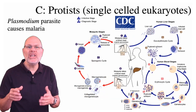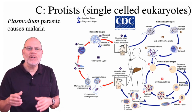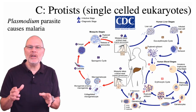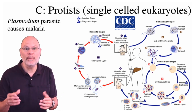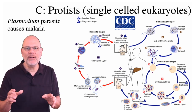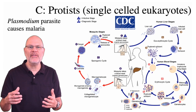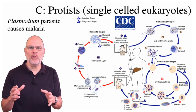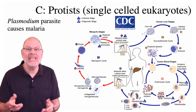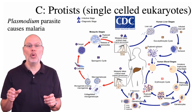Protists — single-celled eukaryotes — can also be pathogens. An example is Plasmodium, which causes malaria. Plasmodium is carried by mosquitoes and it infects red blood cells. Imagine recurring bouts of debilitating fever as the parasite progresses through its life cycle, destroying billions of your red blood cells in the process. That's malaria — a disease that affects 300 to 600 million people worldwide.